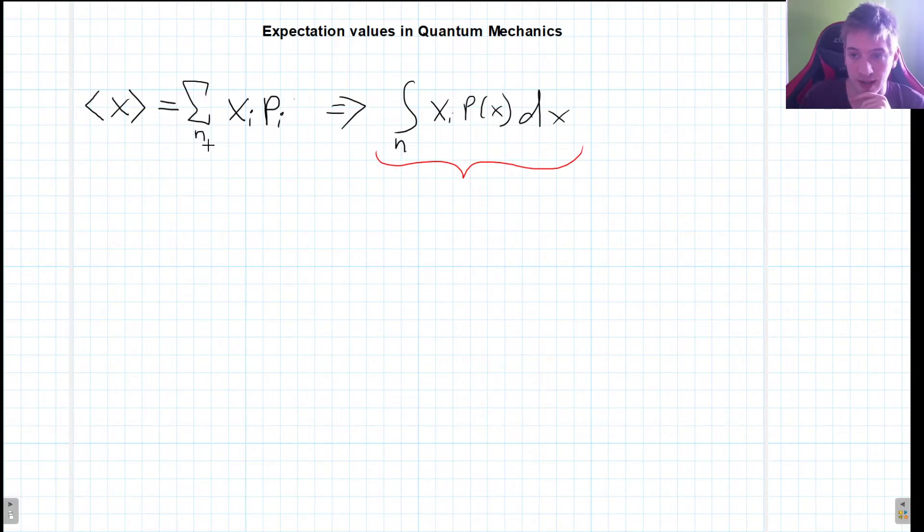So as I was saying, we can see this formula for this just classical statistical expectation value. But remember that in quantum mechanics, this probability is just psi squared.